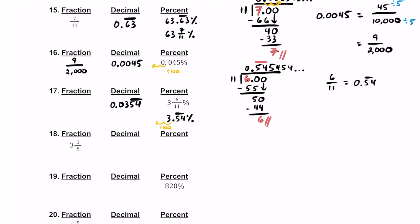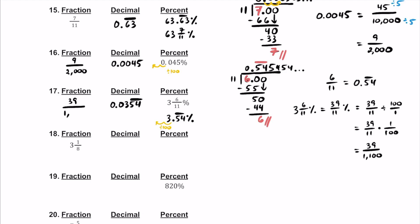How are we going to get to the fraction? We can use the fraction percentage. So let's look at 3 and 6 elevenths percent and turn it into an improper fraction. 3 times 11 is 33; 33 plus 6 is 39. So we have 39 over 11 percent. Remember, percent means per 100 — so if we don't want to be a percentage, we should divide by 100. Dividing by 100 means multiplying by the reciprocal, giving us 39 over 11 multiplied by 1 over 100. We can't do any cross canceling, so 39 times 1 is 39, and 11 times 100 is 1,100. So this fraction is going to be 39 over 1,100.